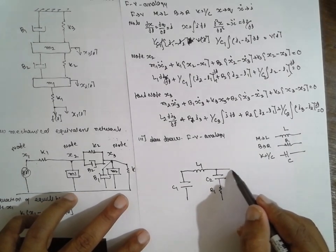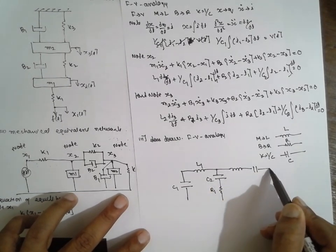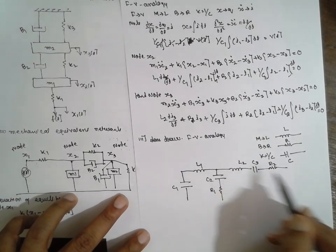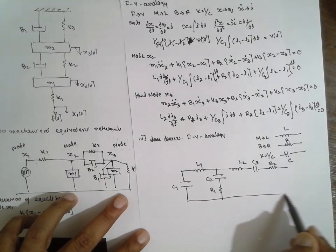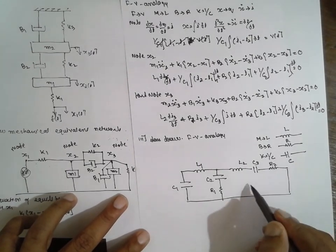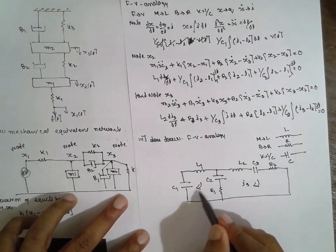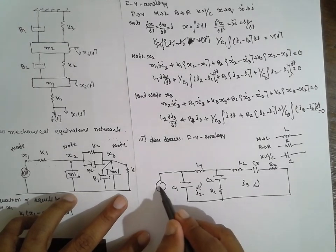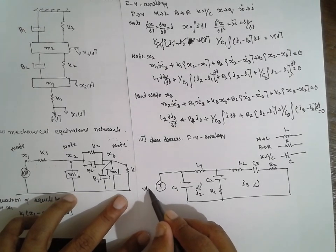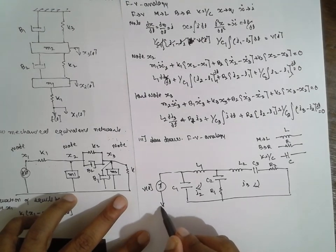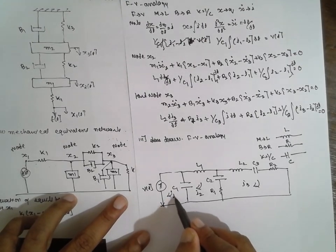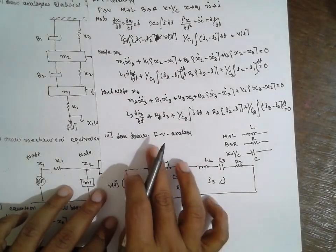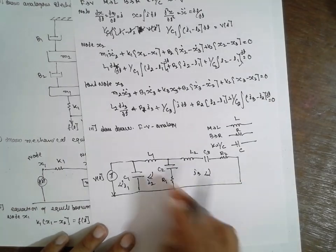There is a horizontal line with inductance, capacitance, resistance R2, C3, and L2. The currents shown are I3, I2, I1, and the source is V(t). In this way you have to show the force-voltage analogy electrical network.